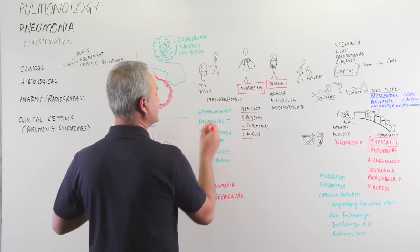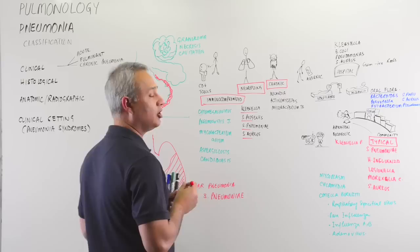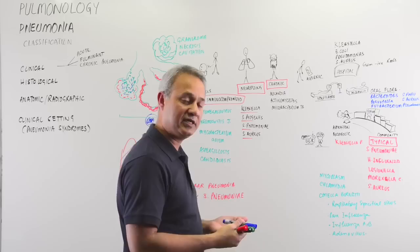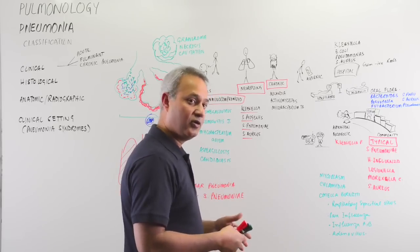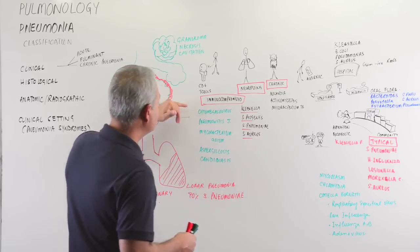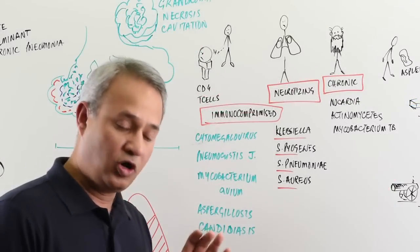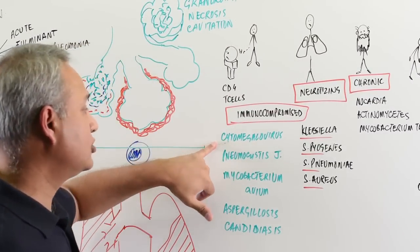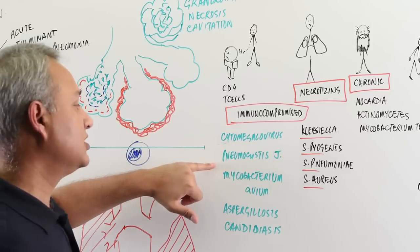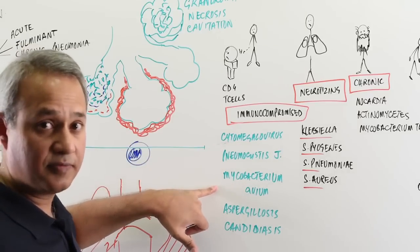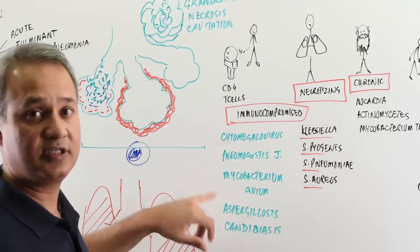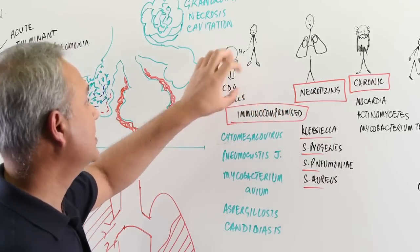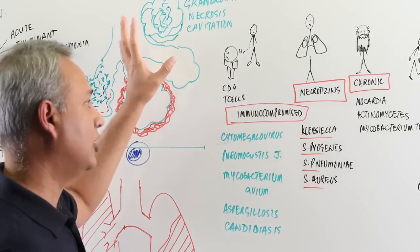And finally, the seventh syndrome is immunocompromised patients. That may be patients with HIV, that may be patients who you have kept immunocompromised because of therapy or such other situations. Immunocompromised patients have common pneumonias with fungi. If you see here: cytomegalovirus, Pneumocystis jirovecii, Mycobacterium avium, candidiasis and aspergillosis are common pneumonia types that affect immunocompromised patients. Here is a patient whose CD4 cell is running away, so he is immunocompromised.